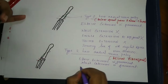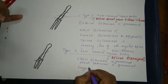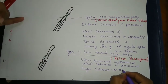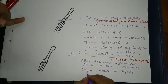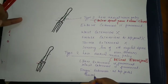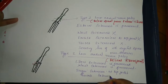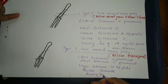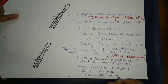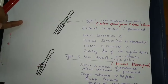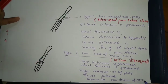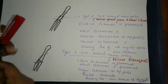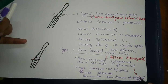The movements lost in Type 2 low radial nerve palsy are: finger extension at the MP joint, thumb extension, and sensory loss over the dorsal aspect of the first digital space. These three movements are lost.